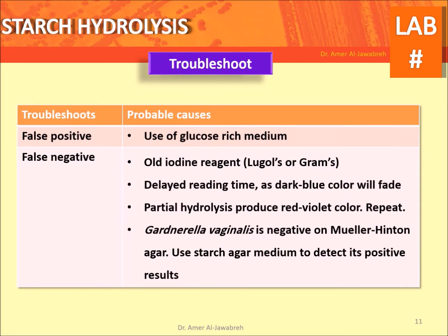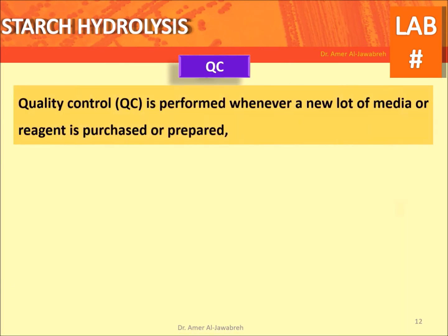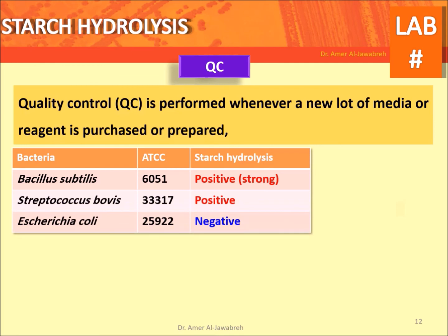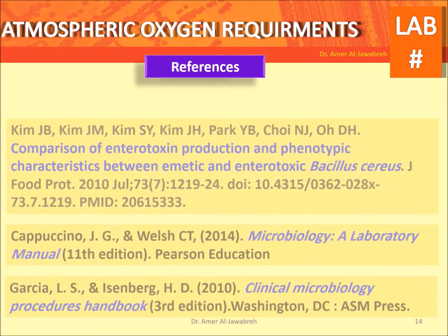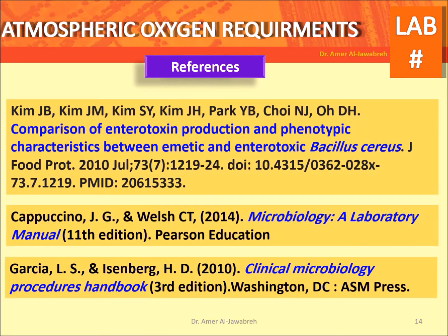Troubleshoots: starch hydrolysis positive bacteria troubleshooting with probable causes. Quality control is performed whenever a new lot of media or reagent is purchased or prepared. Listed below are ATCC bacteria with expected results. Report results using the table provided.